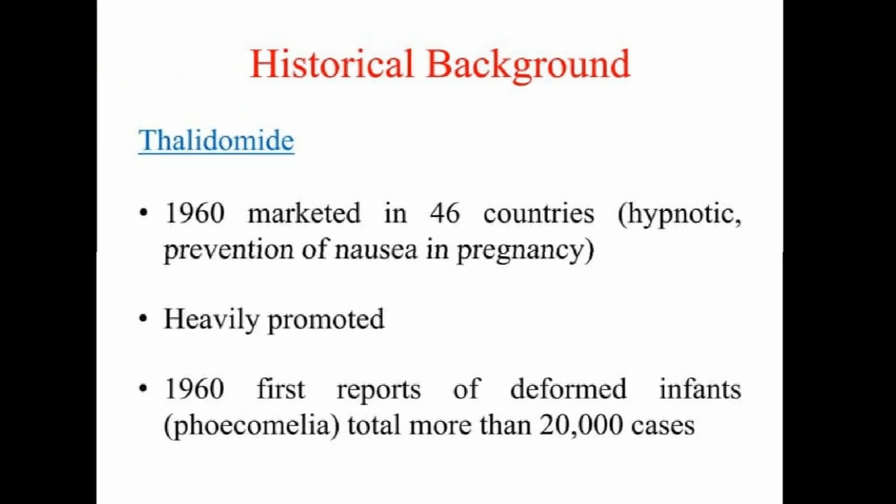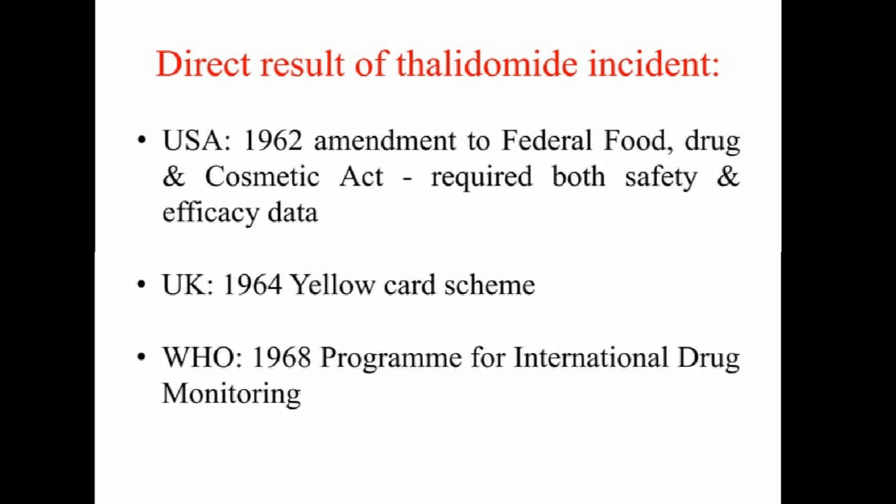Now coming to the historical background of pharmacovigilance. The first tragedy happened in 1960 — the thalidomide tragedy. Thalidomide was marketed in 46 countries as a hypnotic for prevention of nausea in pregnancy and was heavily promoted. In 1960, the first reports of deformed infants, that is phocomelia, occurred in more than 20,000 cases. As a direct result of the thalidomide incident, in the USA in 1962, an amendment to the Federal Food, Drug and Cosmetic Act was established, requiring both safety and efficacy data.